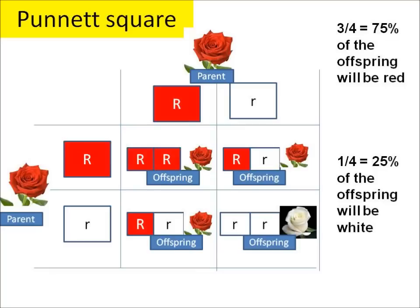In this example both parents are exactly the same — they are both red and both heterozygous, big R little r. One offspring out of four will be big R big R and will be red. Another two offspring will be big R little r but will also be red.